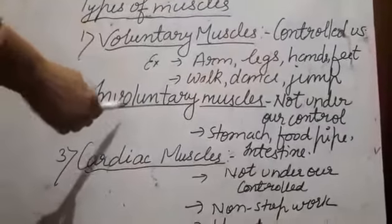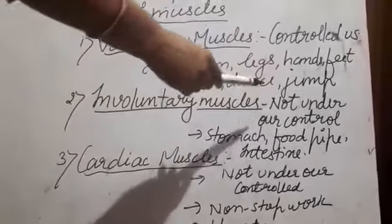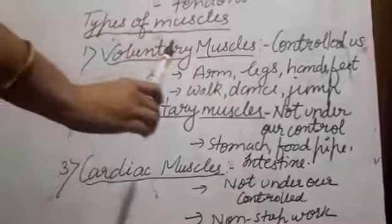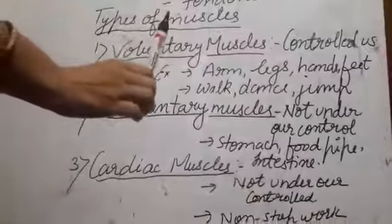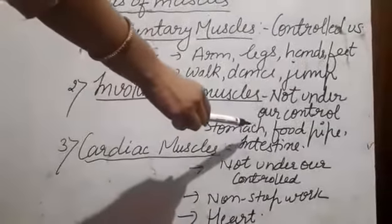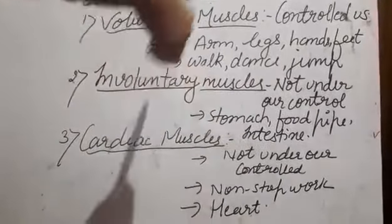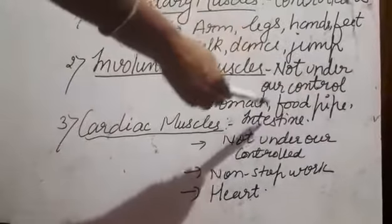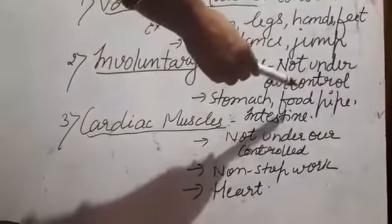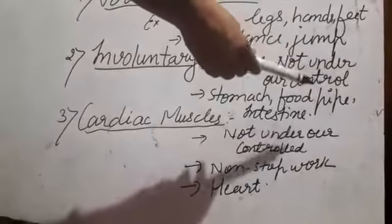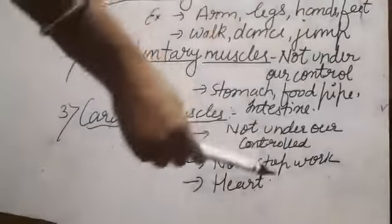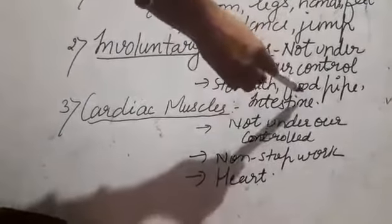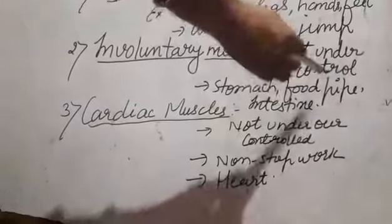Next are involuntary muscles. We have no control over them. They are smooth muscles. They are used in our digestive system — the food pipe which is present in our neck, the stomach, and the intestine.